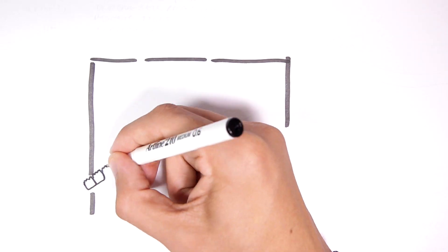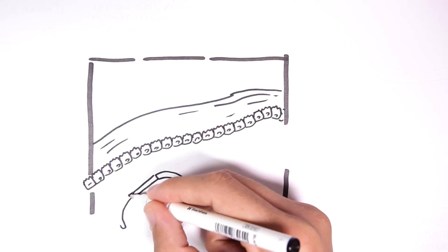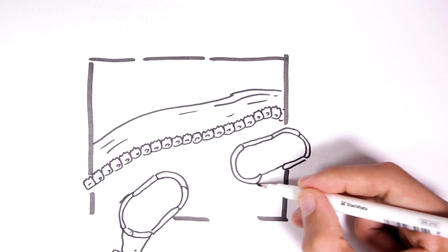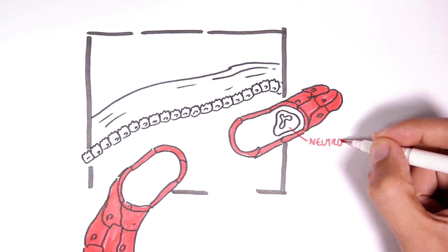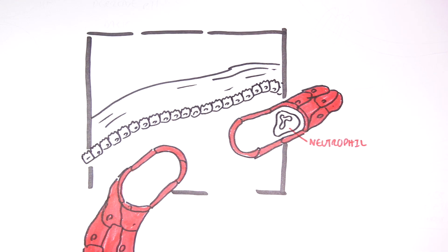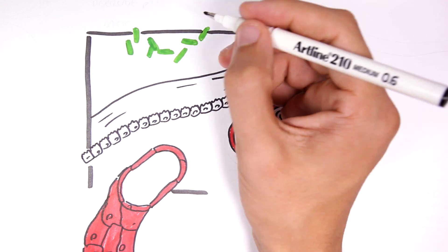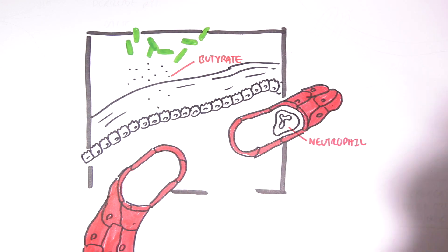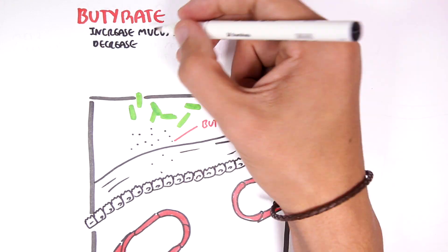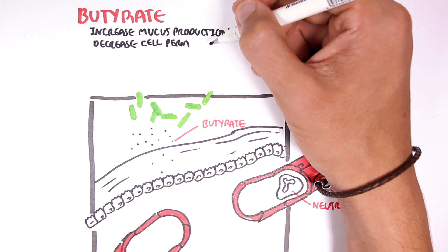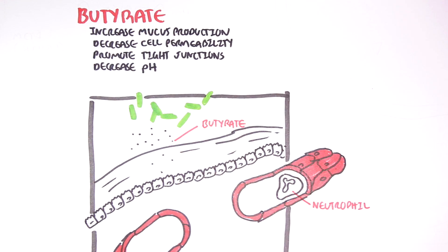Here a section of the colon is drawn again with a blood vessel. Within the blood vessel we can find red blood cells and immune cells such as a neutrophil. The neutrophils play a key role in phagocytosis. Butyrate, as mentioned, is produced through bacterial fermentation. The effects butyrate has on the colon in general include increasing mucus production, decreasing cell permeability, promoting tight junctions, and decreasing pH. These effects all improve the colonic defense barrier, leading to enhanced protection against luminal antigens.